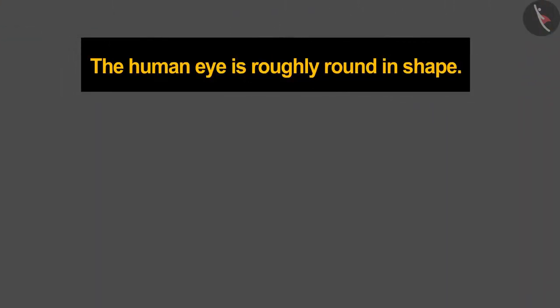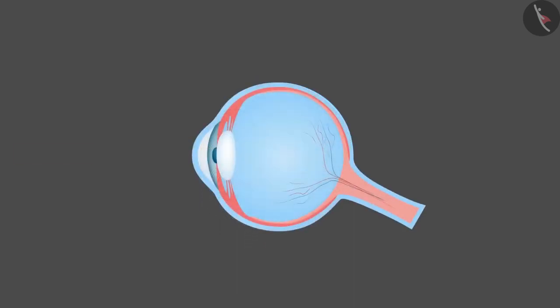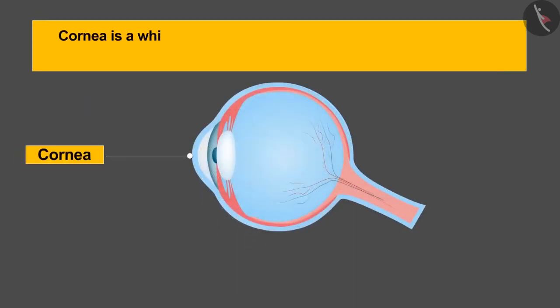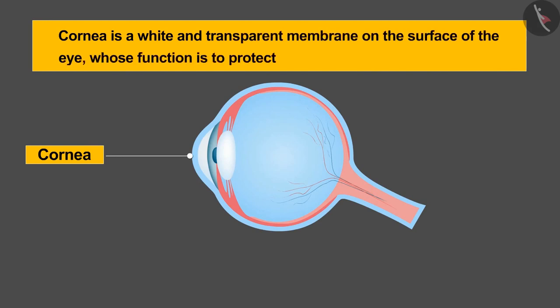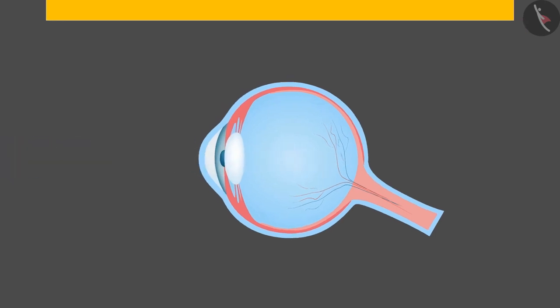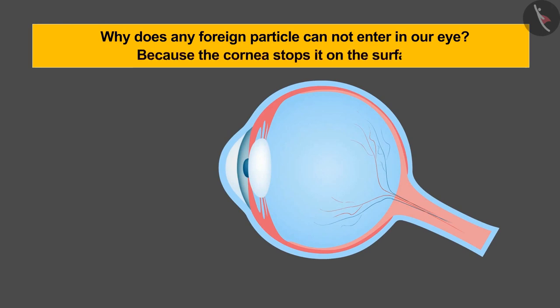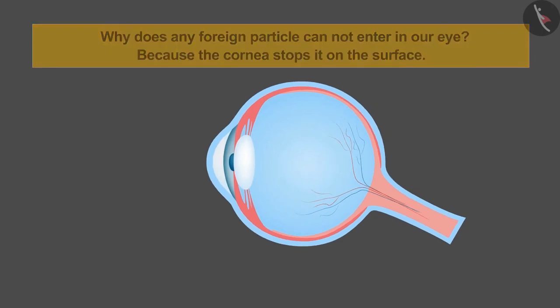The human eye is roughly round in shape. The first part of the eye is called cornea. Cornea is a white and transparent membrane on the surface of the eye whose function is to protect the eye from any foreign particle. Being transparent, only light can enter into the eye. Have you ever thought that why does any foreign particle cannot enter our eye? Because the cornea stops it on the surface.